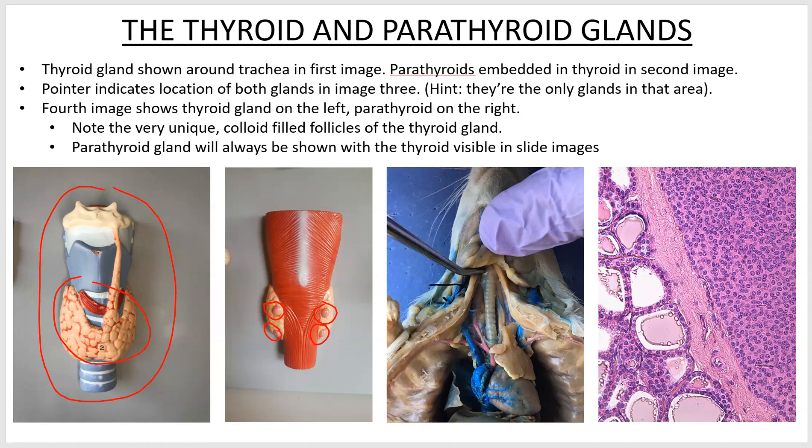The third image is a rat dissection. I've got the probe pointing down here right at the top of the trachea. It's not real visible, but there's a kind of little shiny white thing there — that's one of the lobes of the thyroid gland. Here's a hint: if you see a rat with a pointer way up near the top of the trachea and we're talking about the endocrine system, it's nothing respiratory. The only thing that can be there is the thyroid and parathyroid glands.